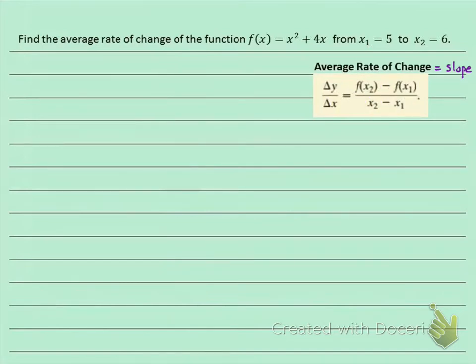So let me come over here. I'll start with my original function: f(x) = x² + 4x. And now, instead of x, let's find f(x₁). We know that x₁ = 5, so let's find f(5).